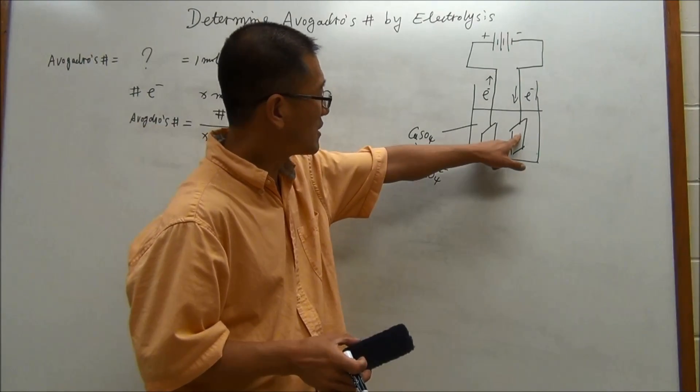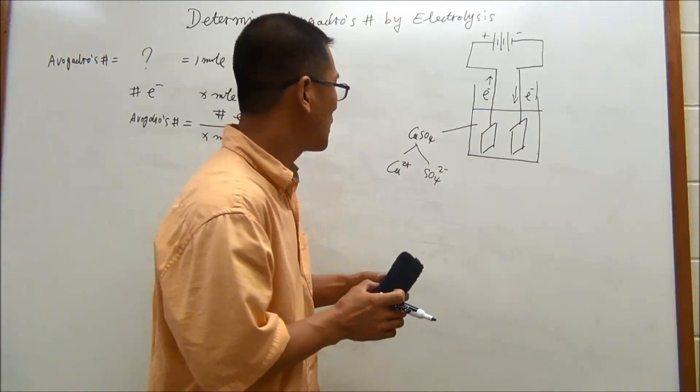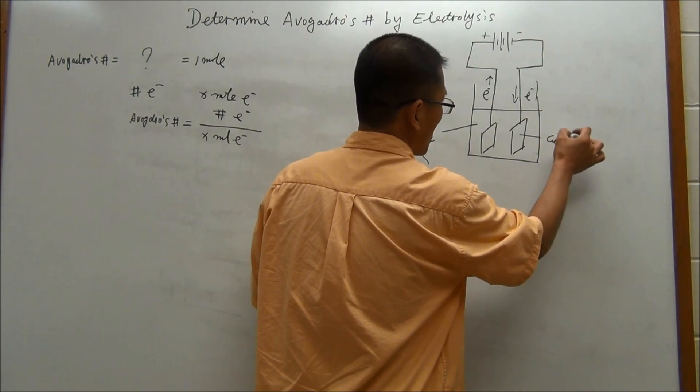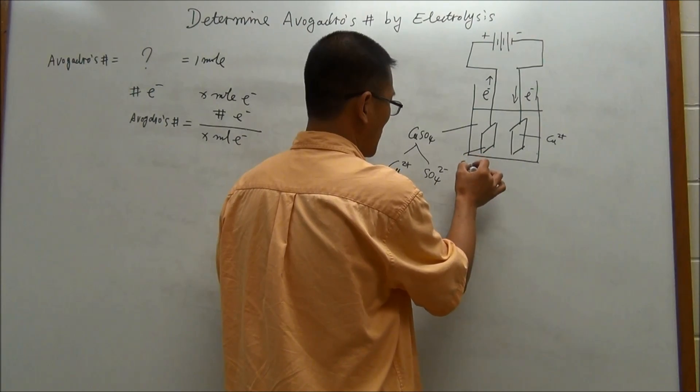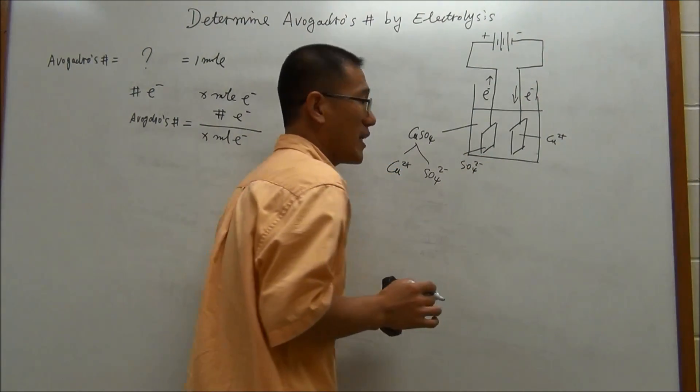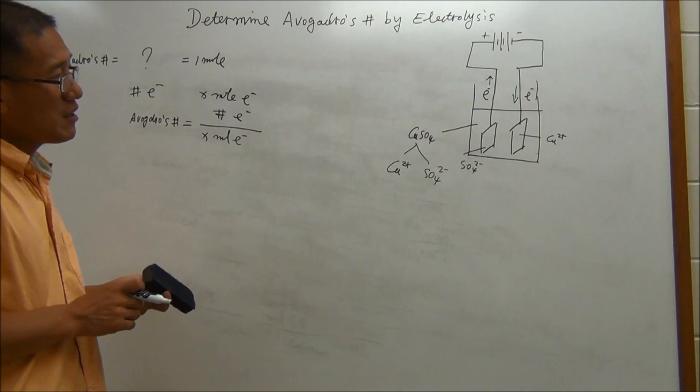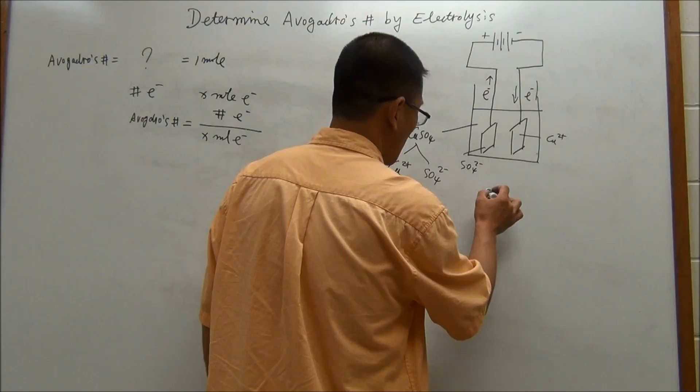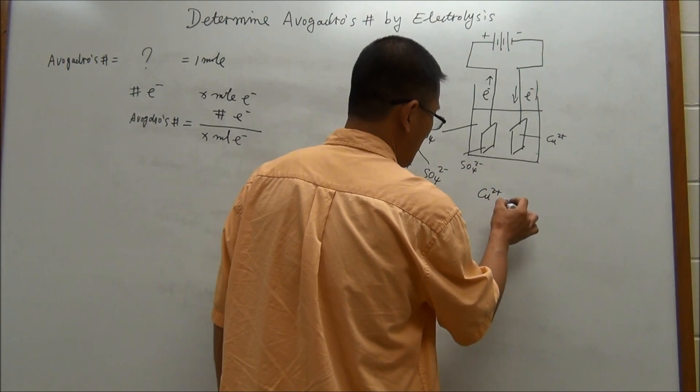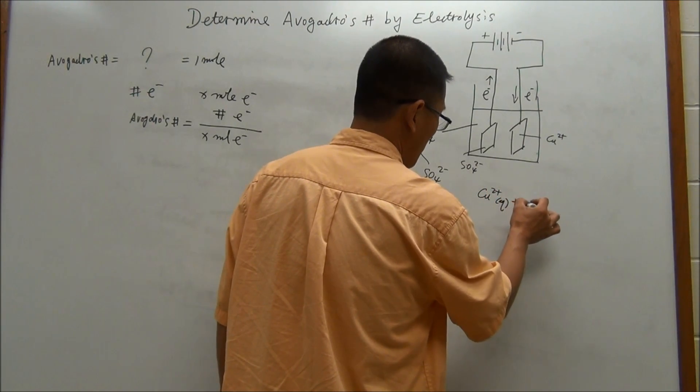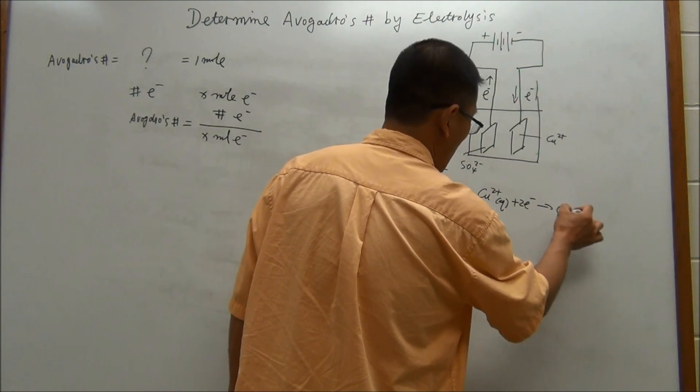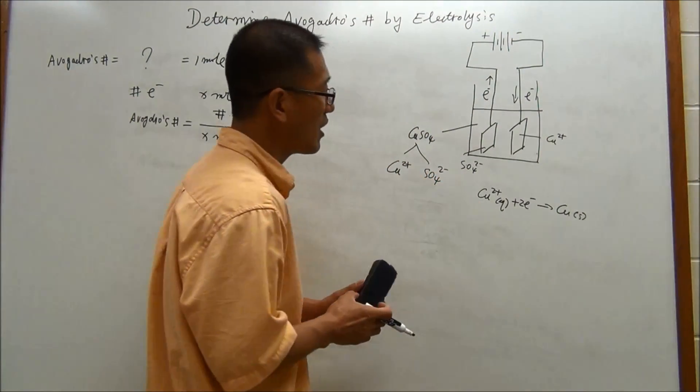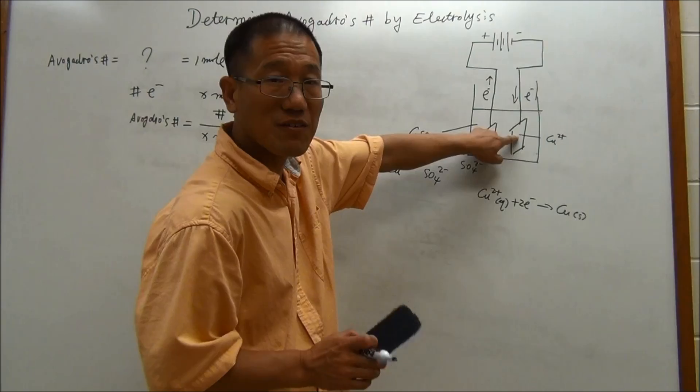Because this side is negative, it has electrons flowing through here. So the cation will be attracted on this side, and this side will attract the anion. When the electrons meet a cation, it turns out that when copper 2+ ions, in aqueous phase, meet two electrons, it will form a copper element, which is a solid. And the solid, generally, will be deposited on the surface of the copper electrode.